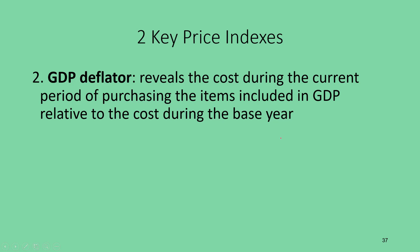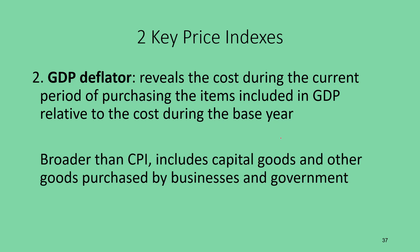The second kind of price index is the GDP deflator, which reveals the cost of purchasing any items included in GDP during the current period relative to the base year. This is broader than the CPI — it includes not just household goods like beer, liquor, toothpaste, and diapers, but also capital goods and government purchases like missiles, highways, conveyor belts, and forklifts — things not typically bought by households.